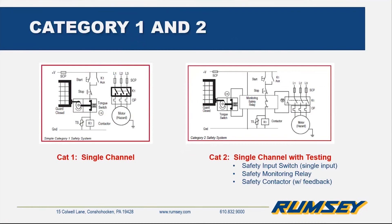Here are some wiring diagrams of the categories and what they look like. Category one is a very simple system — you've got just a basic tongue switch, it's a single channel, no safety relay, very easy to defeat, and any single fault would pretty much defeat that system. Category two has a safety switch with a safety relay now added, but it's still single channel. So if those contacts weld shut and someone were to open that door, the safety system is defeated — one single fault would bring this safety circuit down and create a dangerous situation.